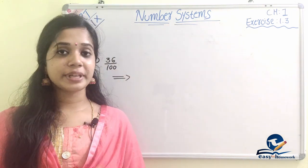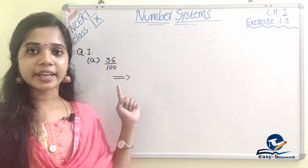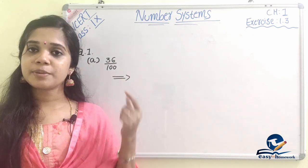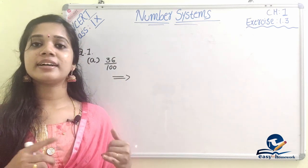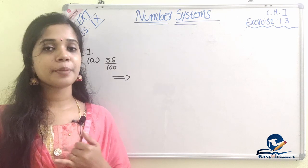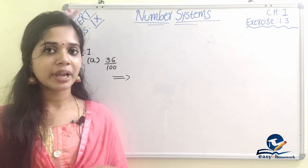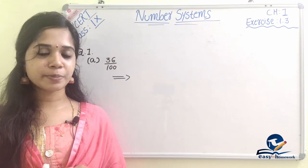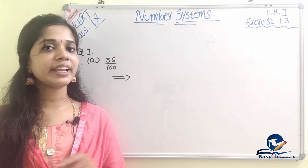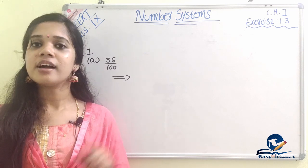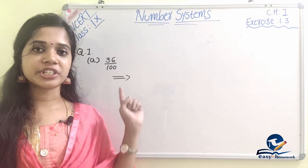What is the first question? We will start with the decimal form of 36 by 100. We will start with decimal expansion. We learned some decimal expansion in the past class. If you want to check, see the link in the description box.